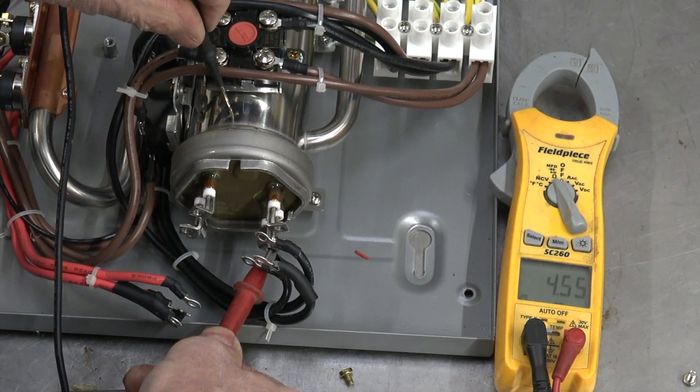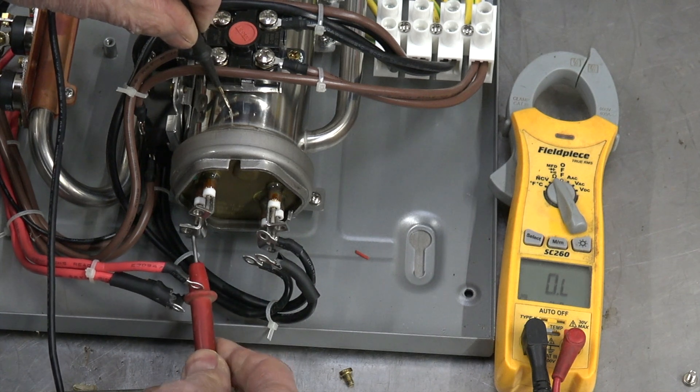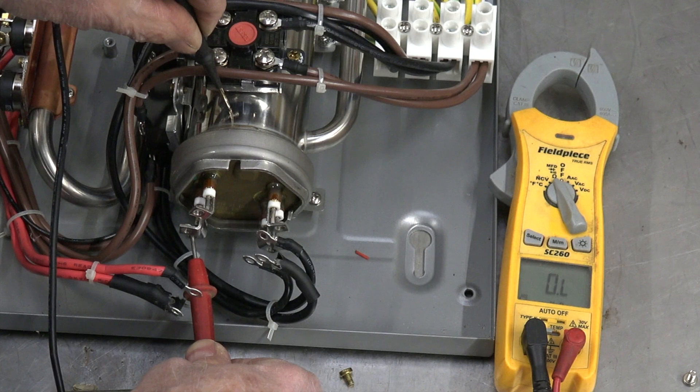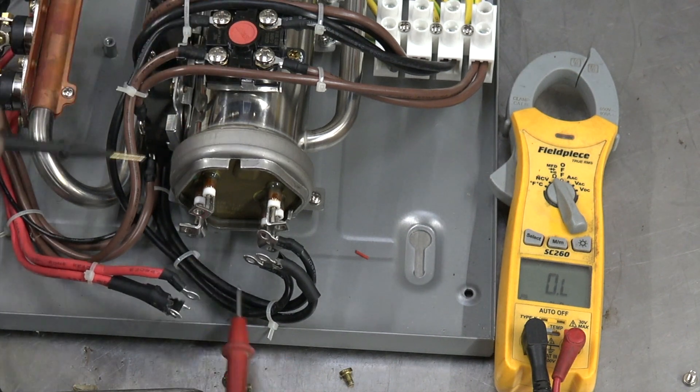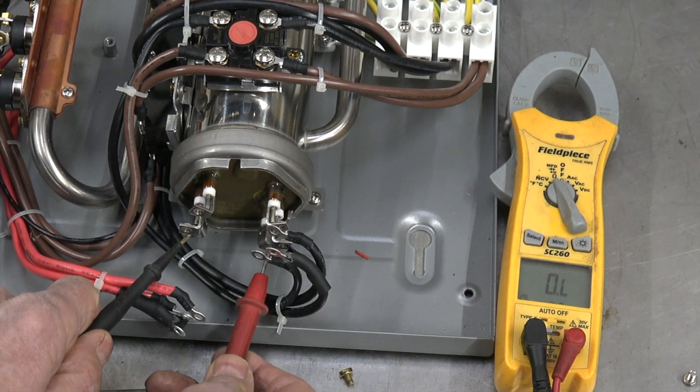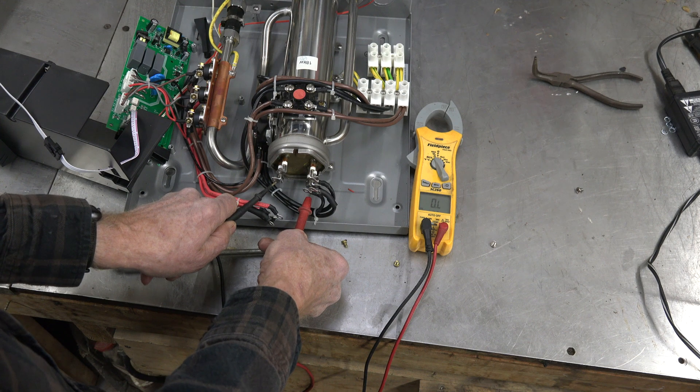Let's go to the bottom one. We have continuity to ground on that side. Here we have continuity - no, we don't have continuity at all. That element is broken. So when I go here across this element, I'm going to read OL.